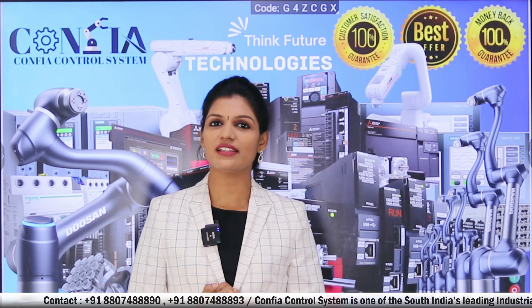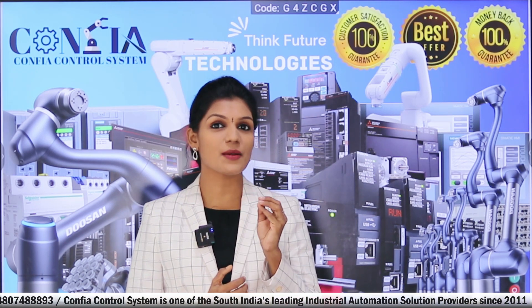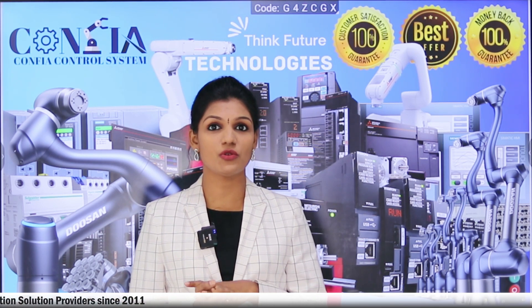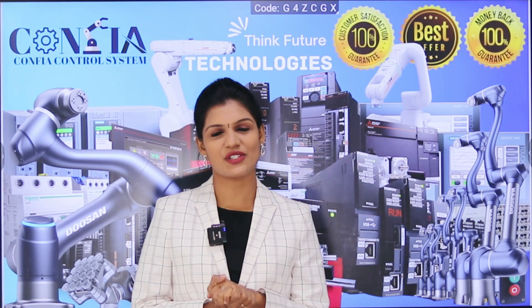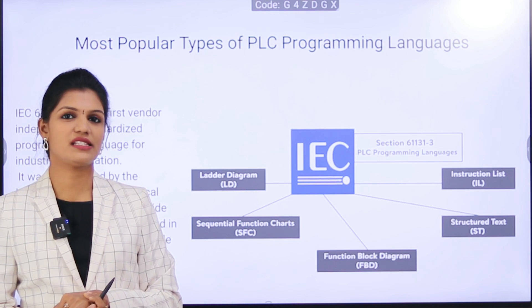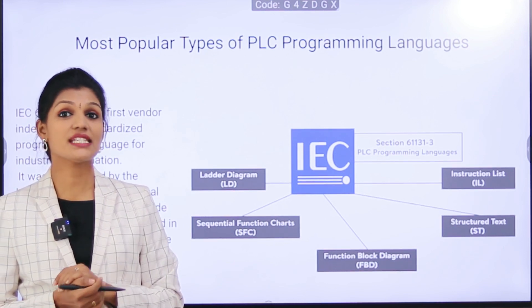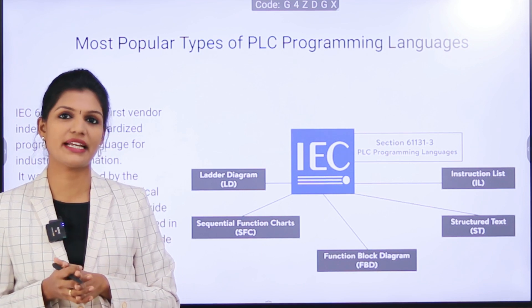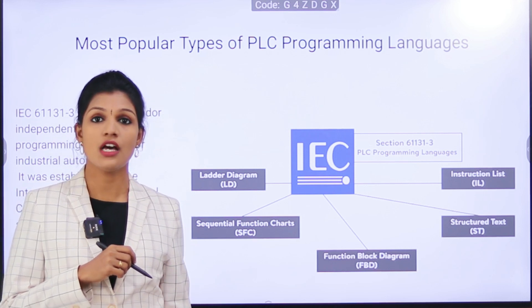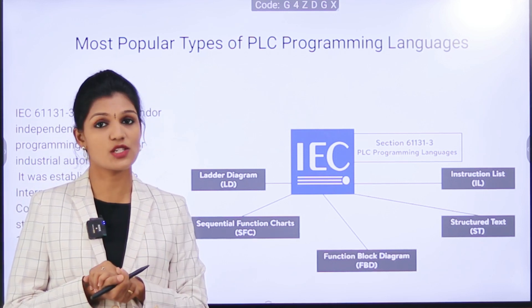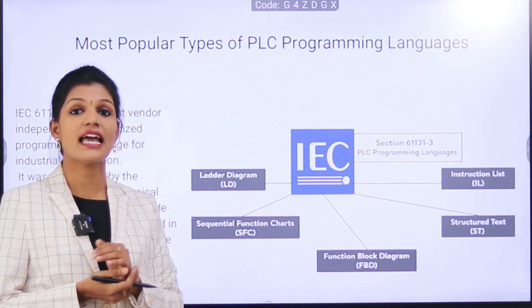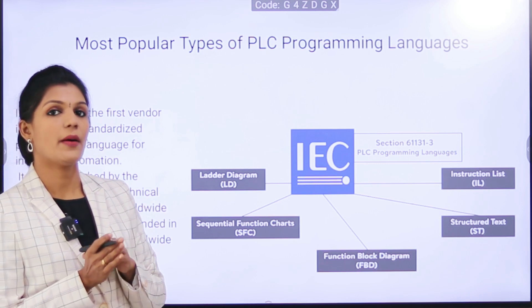Today in this video I am going to discuss the various types of PLC programming languages — how they are classified, where they can be used, and what those types are. The PLC programming languages are classified based on IEC 61131-3, which is the first vendor-independent standardized programming language for the industrial automation field. It was established by the International Electrotechnical Commission, a worldwide standards organization founded in 1906, and the standard is recognized by more than 50 countries.